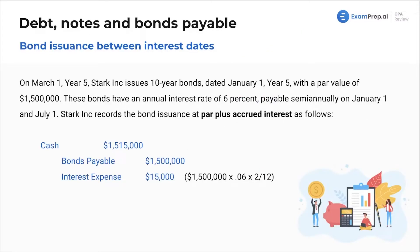So, bond issuance between interest dates — let's look at the example. On March 1st, Year 5, Stark Inc. issues ten-year bonds: 1.5 million, annual interest rate of 6%, payable semi-annually on January 1st and July 1st. Stark Inc. records the bond issuance at par plus accrued interest. We issued the bonds on March 1st, so we have two months — January and February — of interest that was accrued. The bonds were dated January 1st, two months before they were issued.